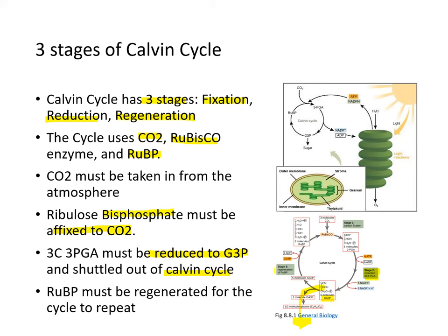Afterwards, ribulose bisphosphate must be regenerated for the cycle to repeat. So here are three molecules of ribulose bisphosphate. With the rubisco enzyme and three molecules of CO2, carbon becomes fixed, and you produce six molecules of 3-PGA. Then 3-PGA becomes reduced to become G3P, which becomes sugar outside the Calvin cycle.